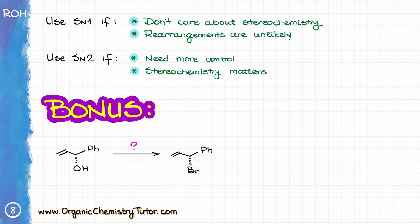Now, if you're still here, thank you for watching till the end. As an extra bonus, I have a challenge for you: how would you convert R-1-phenylprop-2-yn-1-ol into 3-bromo-3-phenylprop-1-yne, retaining the configuration and keeping the triple bond where it is? I'll give you a hint — you'll need to use a sequence of two different substitution reactions. Write your answer in the comments below, remember to hit the like button if you liked this video and learned something new, and subscribe to the channel for daily organic chemistry updates.